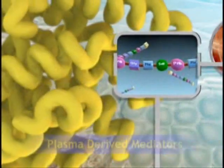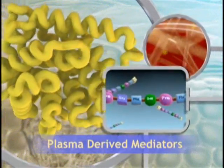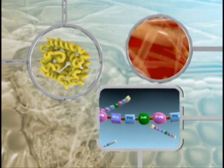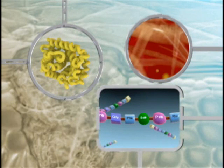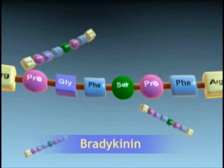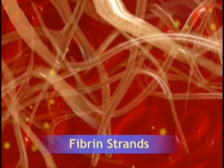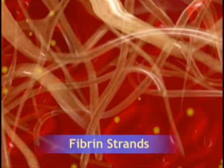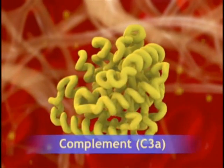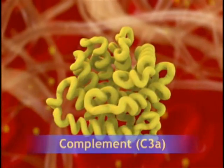The three major plasma-derived mediators are present in plasma in precursor forms that must be activated, usually by a series of proteolytic enzymes. The kinins increase capillary permeability and stimulate pain receptors. The clotting system traps exudates, microorganisms, and foreign bodies. The complement cascade causes vasodilation, promotes leukocyte chemotaxis, and augments phagocytosis.